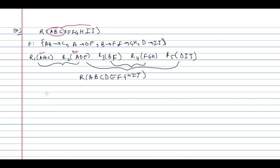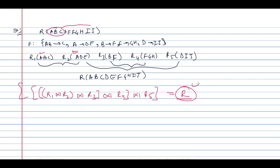The decomposition is lossless if R1 ⋈ R2 ⋈ R3 ⋈ R4 ⋈ R5 equals R. First, doing R1 natural join R2: the common attribute is A. From the functional dependency A determines DE, A is a key attribute in R2(A, D, E). Therefore this decomposition step is valid and lossless.